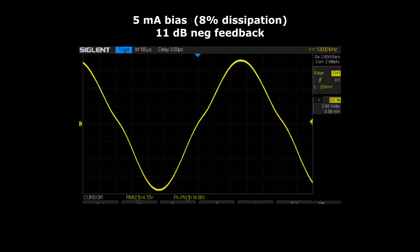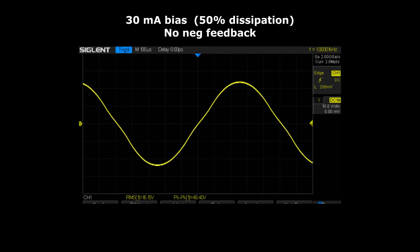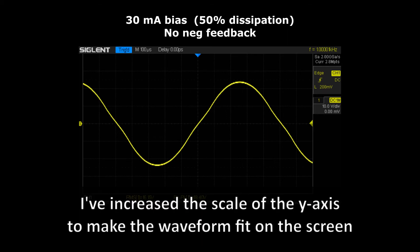Now if I increase the bias to 30 milliamps you can see that the kink goes away. This is because the signal is now small enough relative to the bias current to stay within the class A region. If I increase the signal to 48 volts peak to peak it crosses over into class B and the kink reappears.